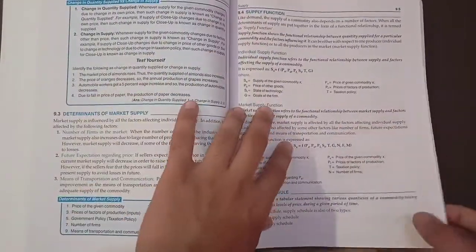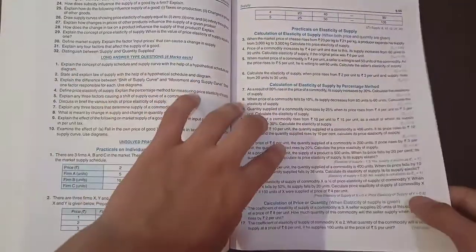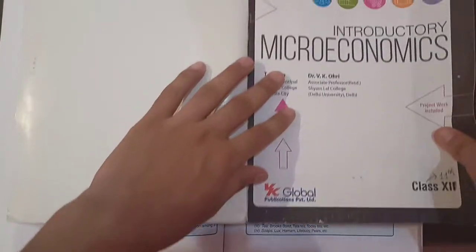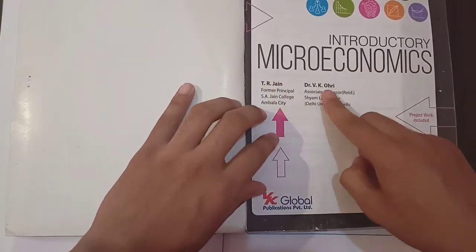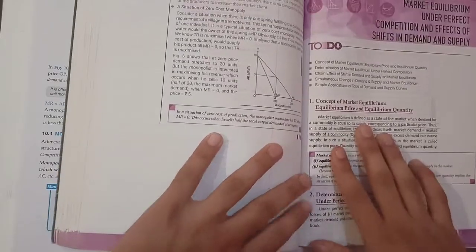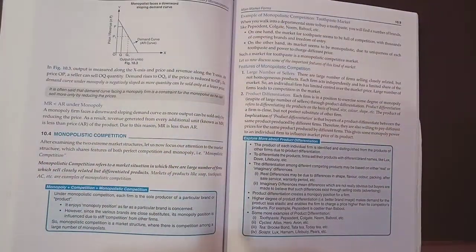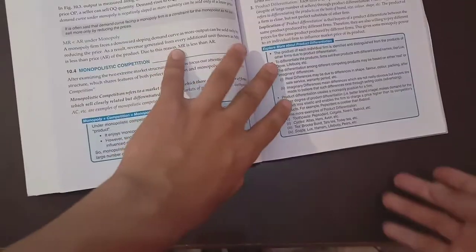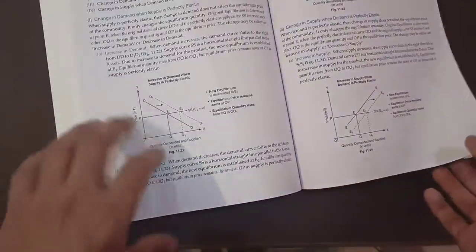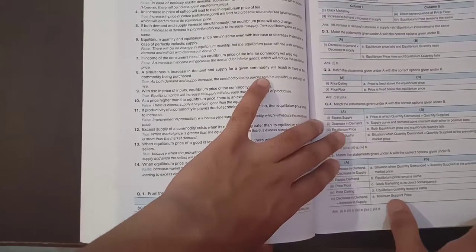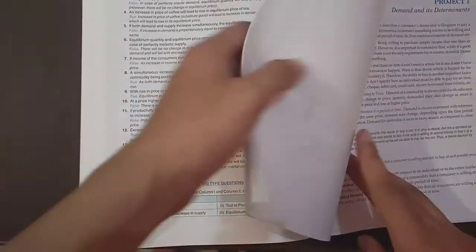So this book is better than TR Jain, VK Ohri. I also have this book. So here's this book. This is Introductory Microeconomics, TR Jain, VK Ohri. I have this book, but I bought this book because I don't like TR Jain, VK Ohri. My school also follows this book, but I don't follow this book because this book's summary is very hard - very high level - and you can't able to understand it easily.